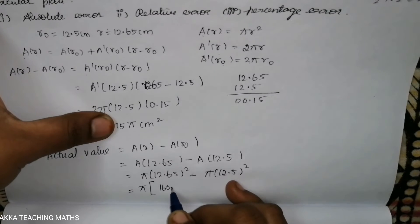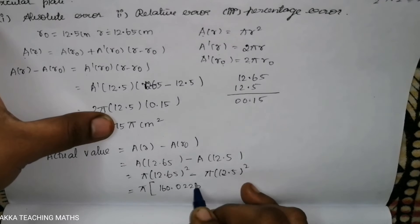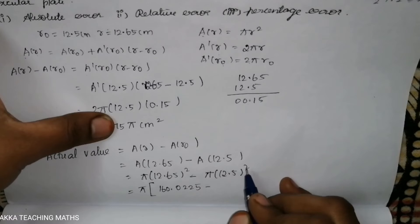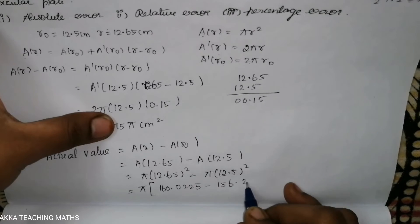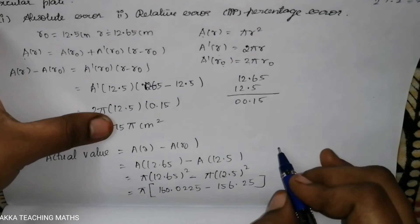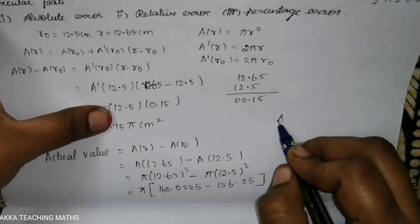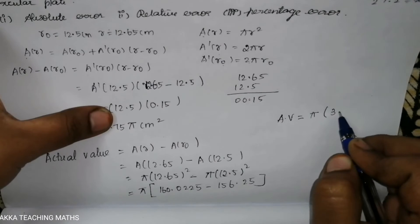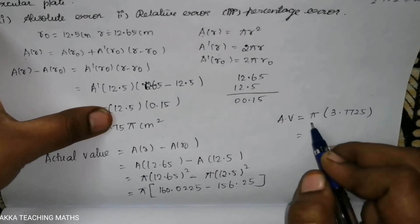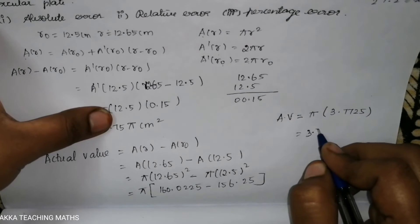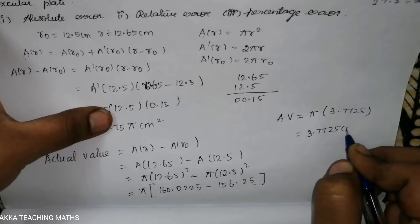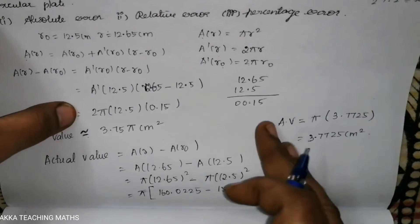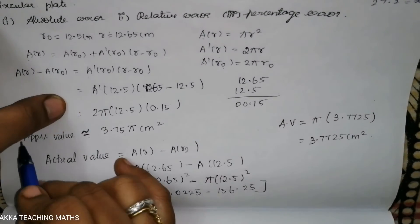So: 160.0225 − 156.25 = 3.7725. The actual value is 3.7725π cm². Now we can compare approximate value and actual value.